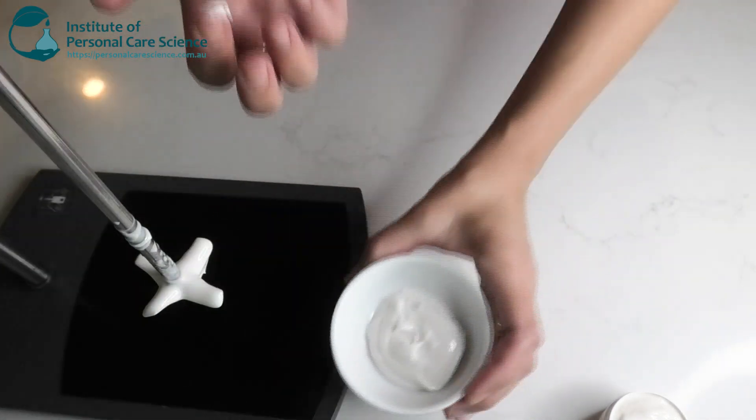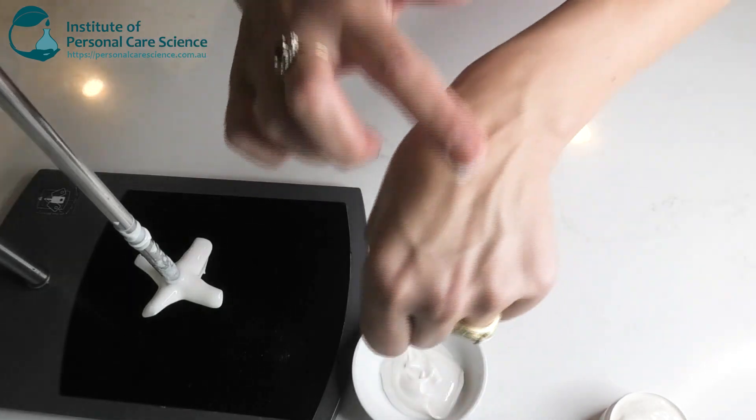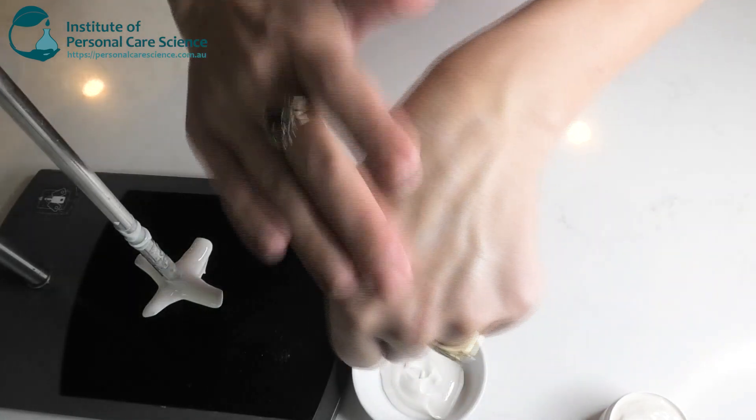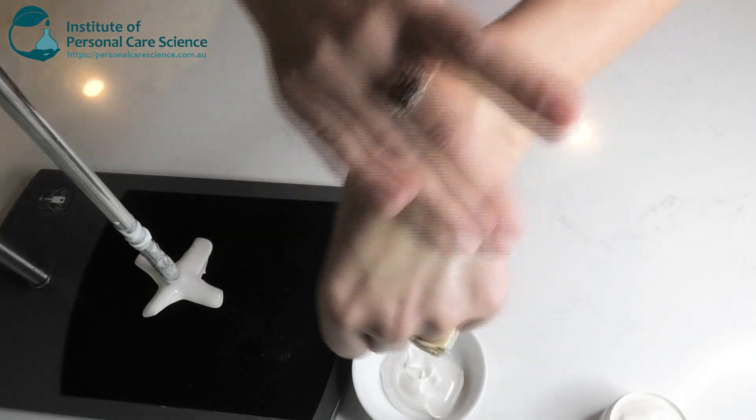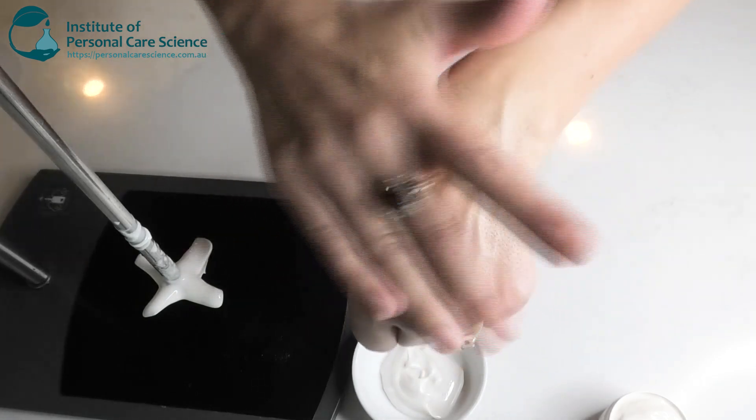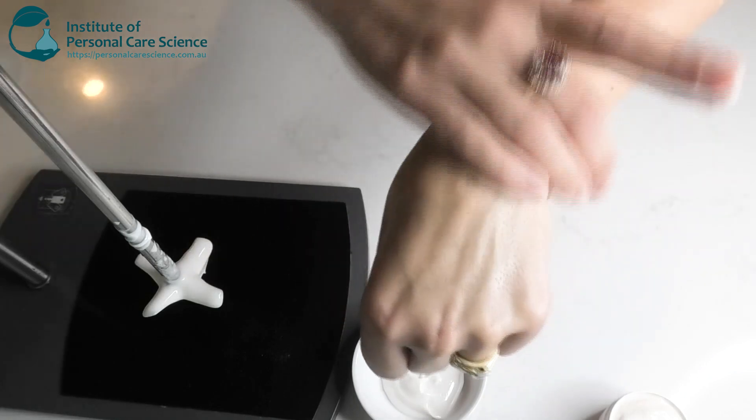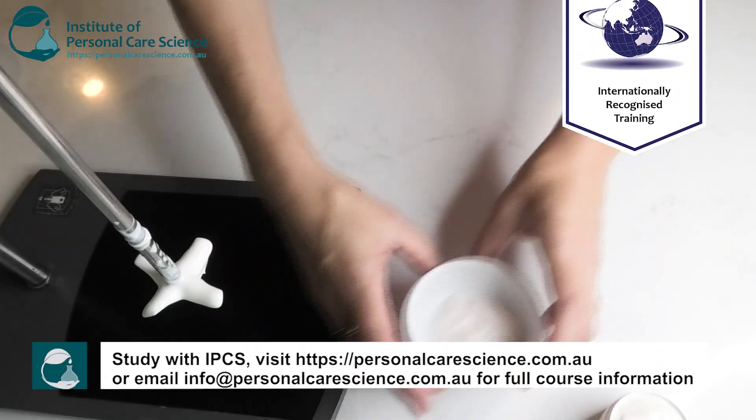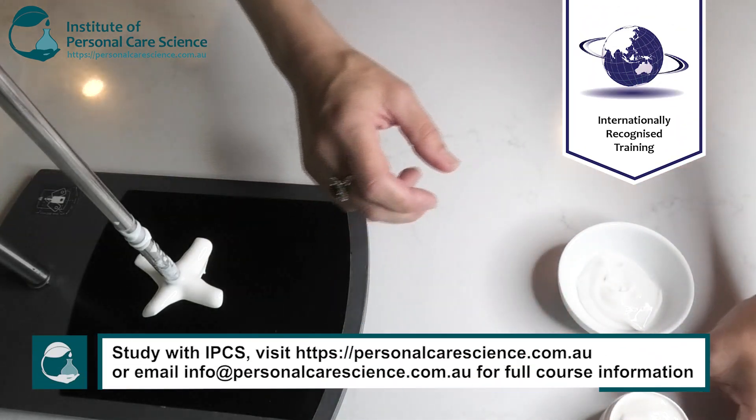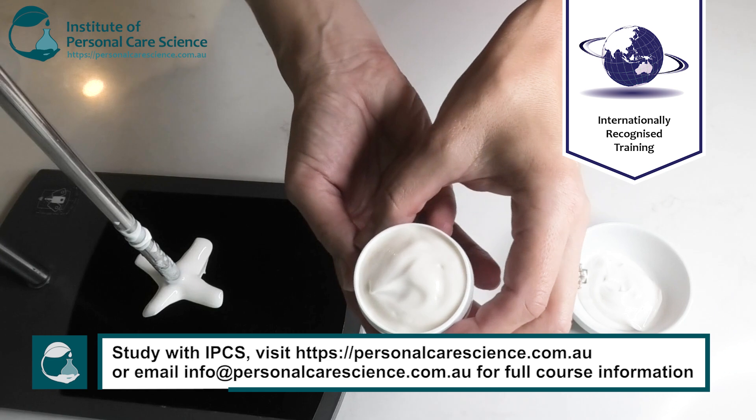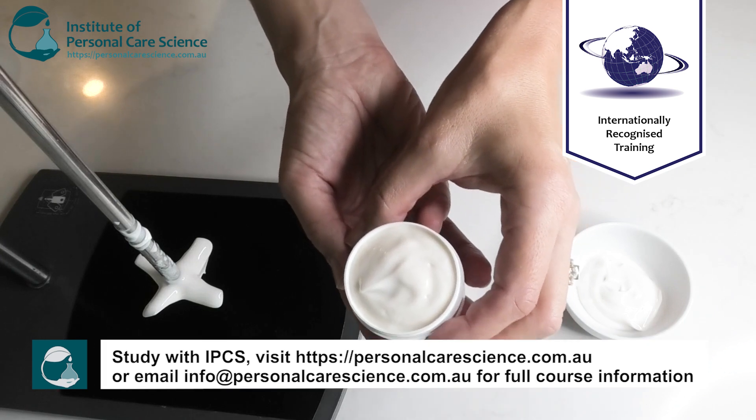You can see that beautiful, rich consistency. So easy. No heating. That's how easy it is. Beautifully smooth emulsion. You just have to pop it aside for it to reach its full viscosity. And then you will end up with this beautifully hydrating, non-greasy barrier cream.